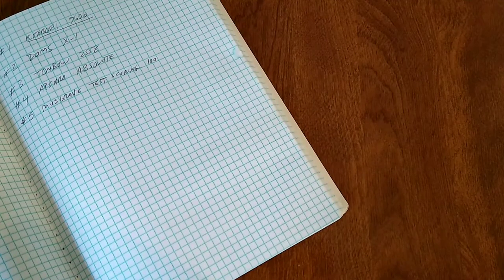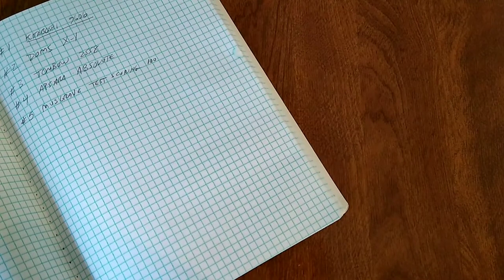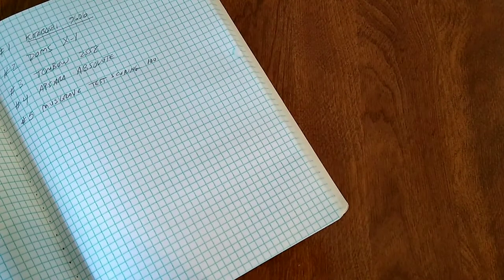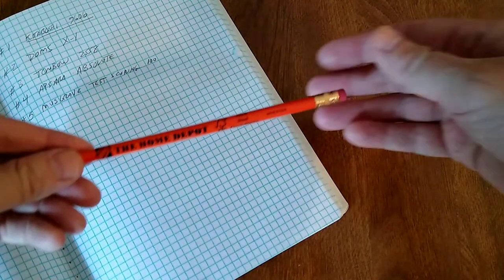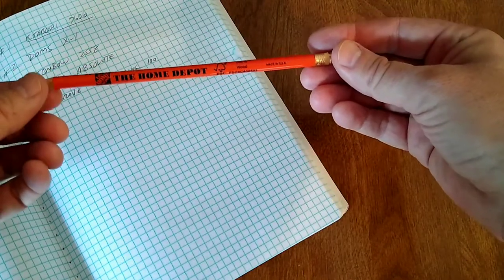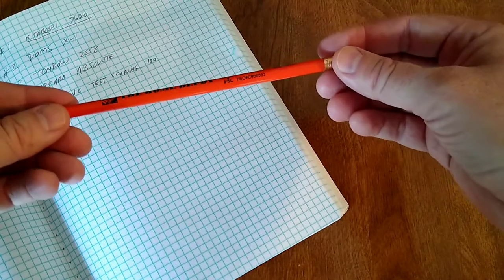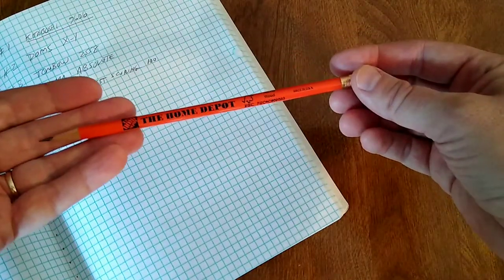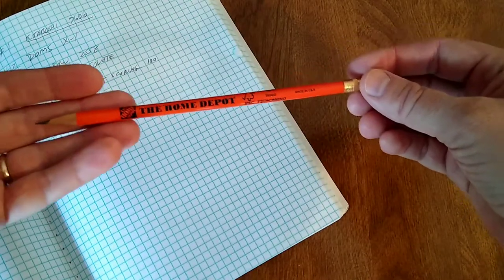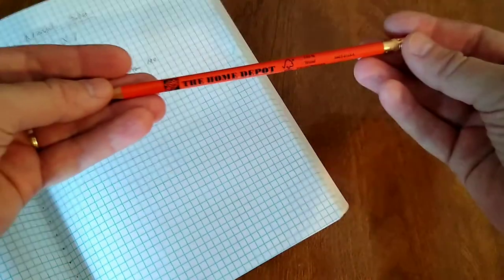Number six of my favorite writing pencils, another American product. This one I believe is also manufactured by Musgrave pencils. This is a Home Depot pencil. You get this at Home Depot. It's apparently marketed as maybe a lumber marker or something of that nature. It comes in a tube of I think 12 pencils for a couple bucks.